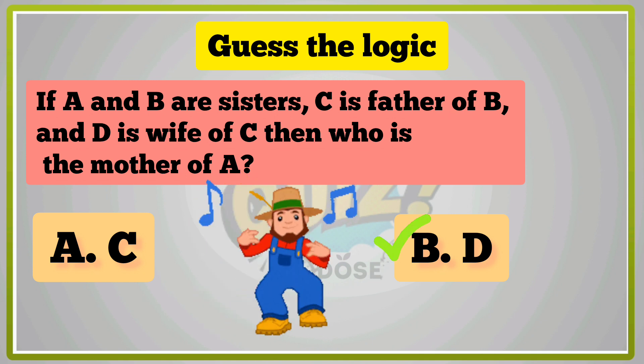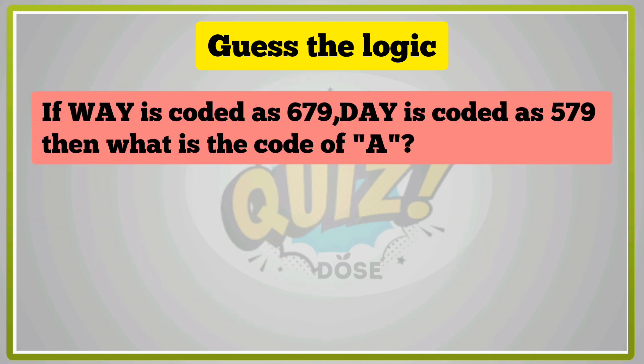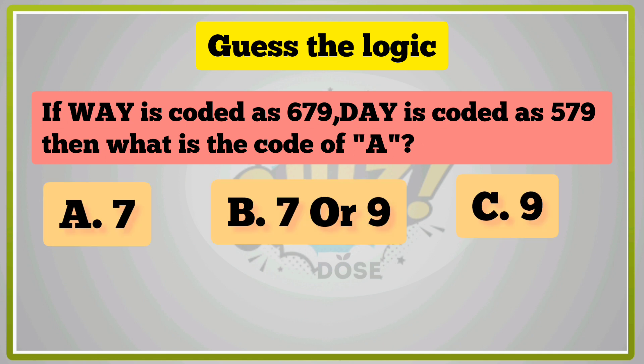B, D is right answer. If W, A, Y is coded as 679, D, A, Y is coded as 579, then what is the code of A? A, 7. B, 7 or 9. C, 9.